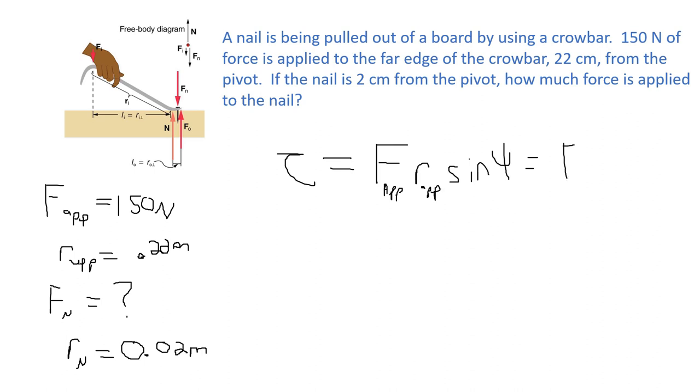In this example we're going to have torque of the force applied and the force on the nail itself. When we do our force diagrams the angles will be 90 degrees, which makes the sine of 90 degrees equal to one, so we get maximum torque in this particular example.